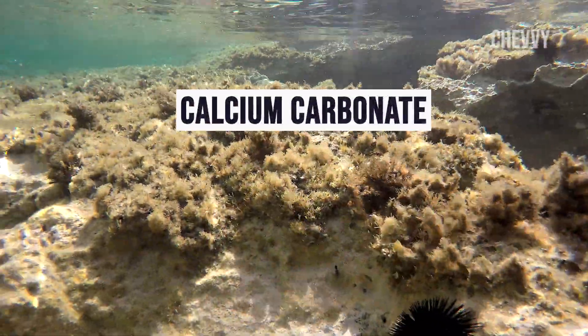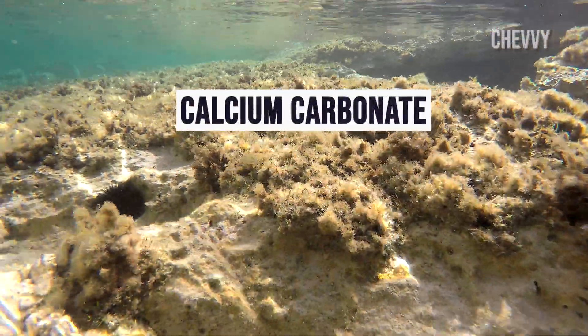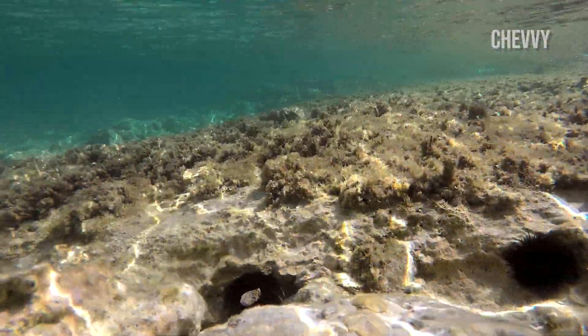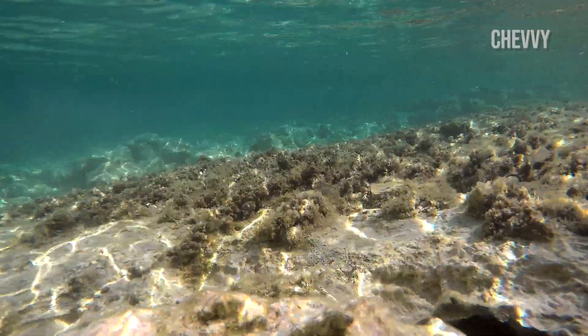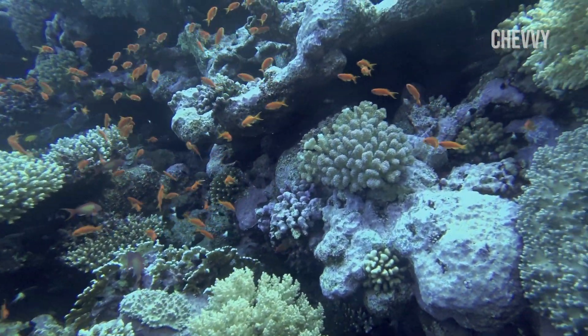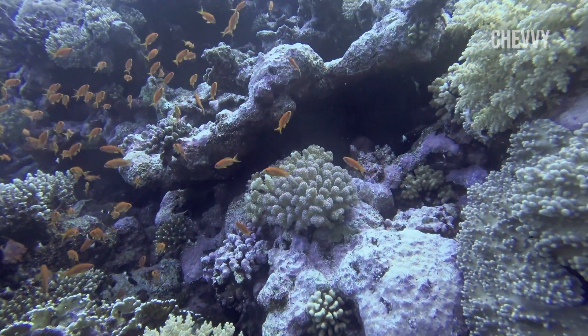Calcium carbonate is created in the ocean when bicarbonate ions combine with calcium ions. Shell-forming creatures like corals and plankton produce the majority of the calcium carbonate. When these organisms die, it sinks to the ocean floor.